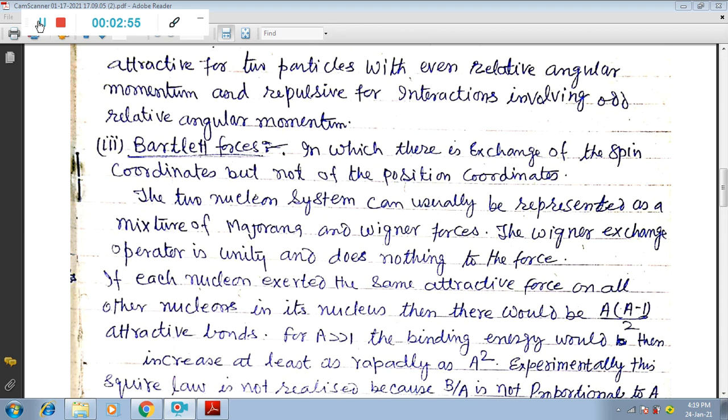The two nucleon system can usually be represented as a mixture of Majorana and Wigner forces. The Wigner exchange operator is unity and does nothing to the force. If each nucleon accepted the same attractive force on all other nucleons in its nucleus, then there would be A minus one upon twice attractive bonds for A greater than one.